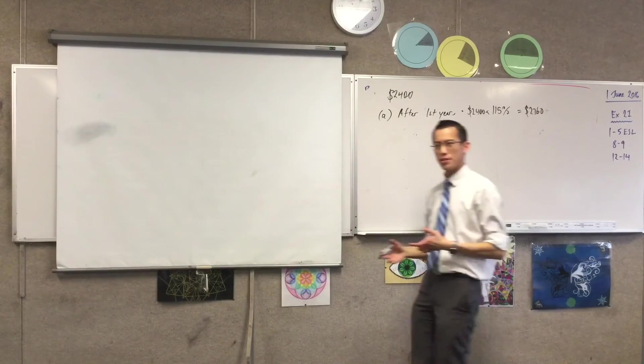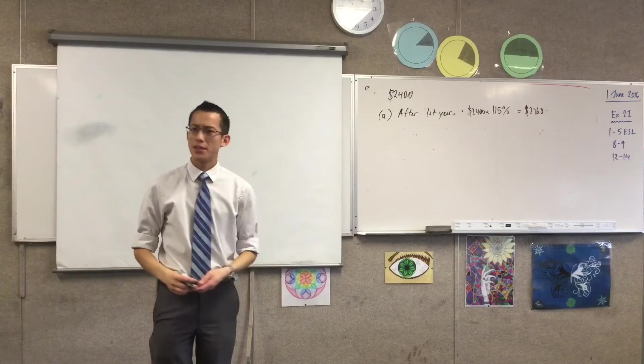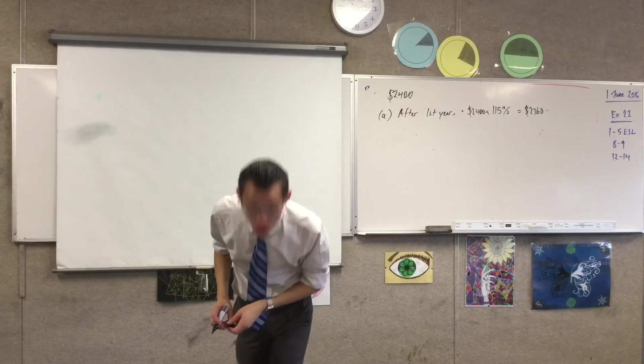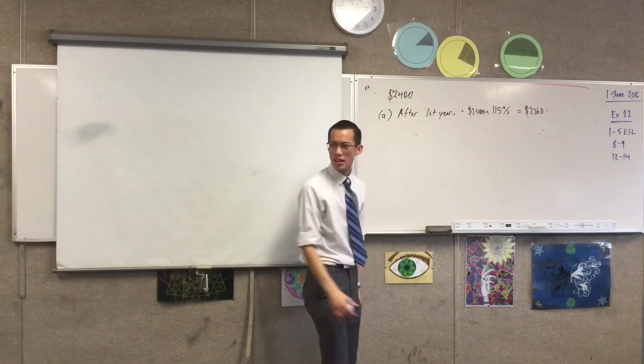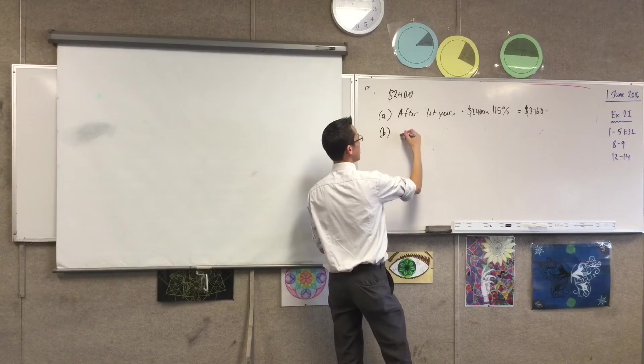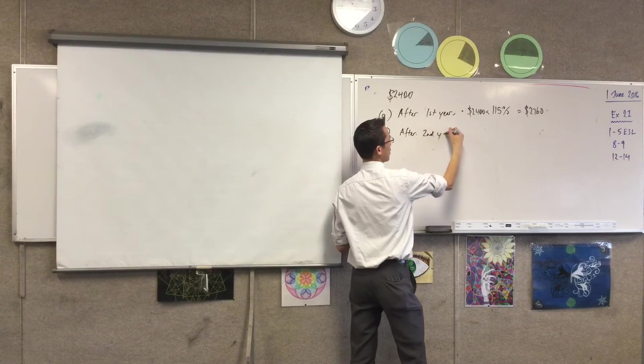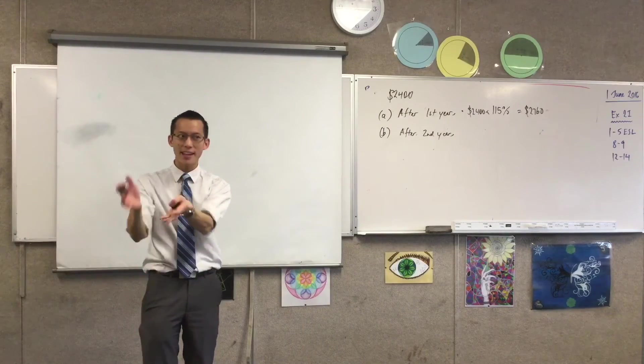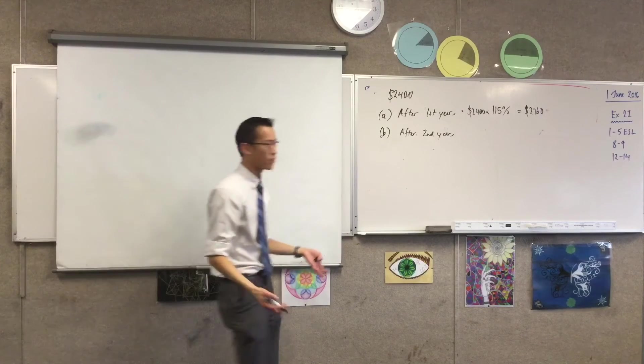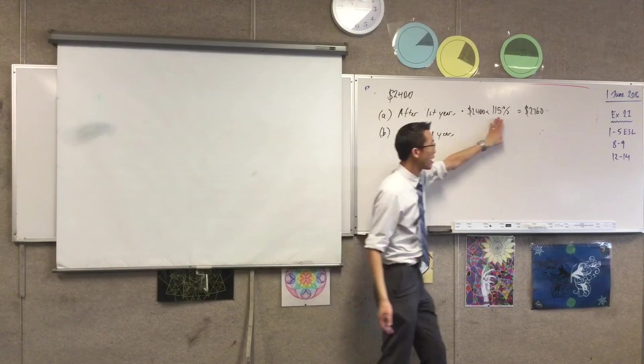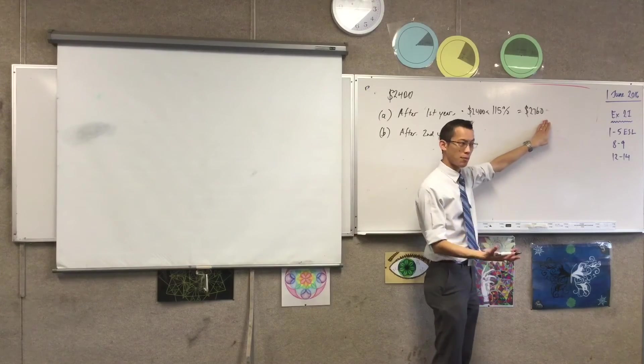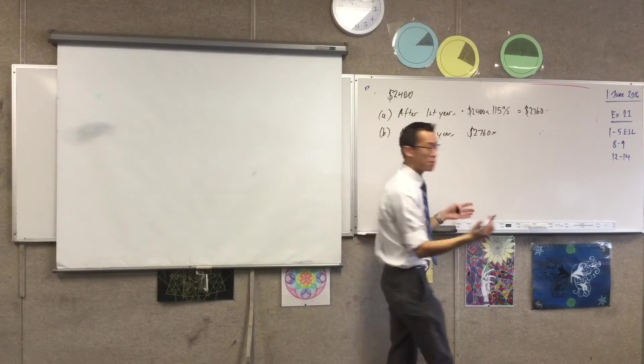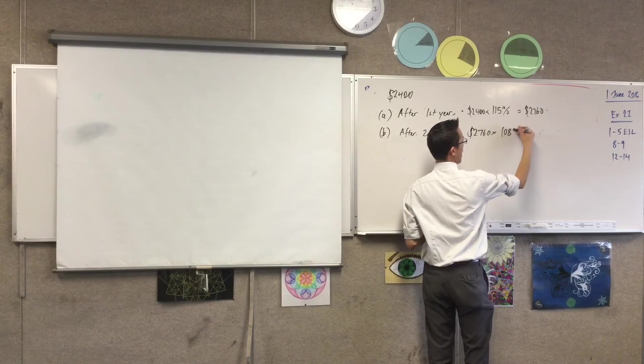So then what happens is, in the subsequent year following this, the same thing doesn't happen. Like, I don't know, the share market's doing better or worse, whatever. Actually, it's doing worse. So it still increases, but not as much. So when we look at part B, after the second year, I think the percentage is 8%, 8% increase. But importantly, the second year starts from the end of the first year, right? So I'm not going to say 2,400. I'm going to say 2,760. That's my new start point. So I'm going to say 2,760 multiplied by what? 108%. So there's the 100 and the extra percentage.